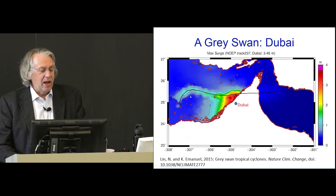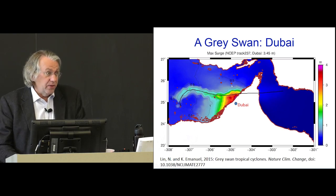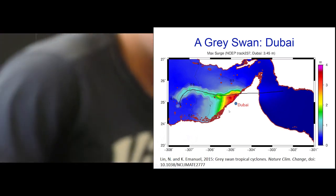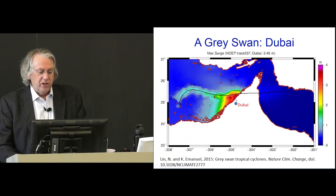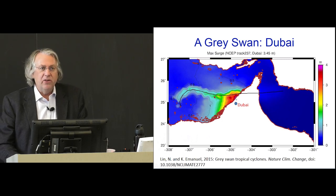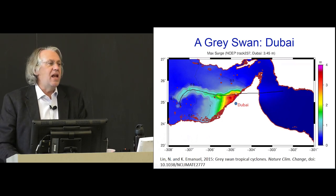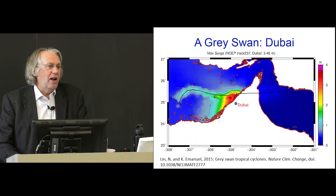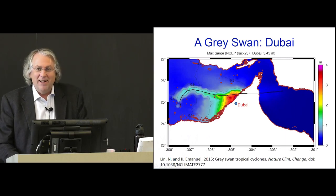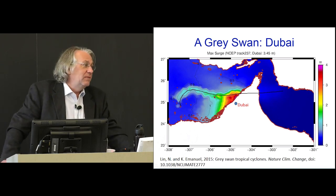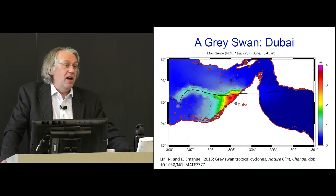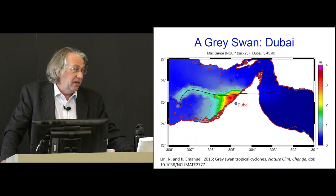So, we would expect that this storm would generate a three, maybe three and a half meter surge at Dubai. That's about 10 feet. Now, believe me, if you've seen photographs of Dubai, or if you've been there, the people who designed that city had no idea that it was possible to have a hurricane. If something like that happened in Dubai, it would be a terrible calamity for that city.